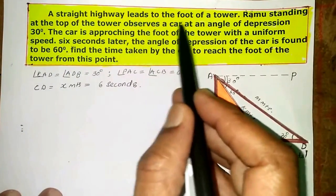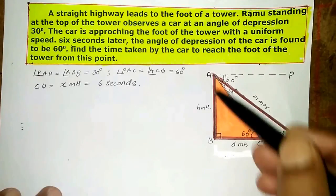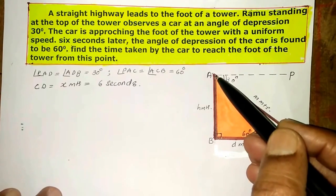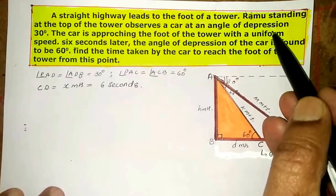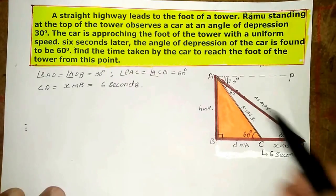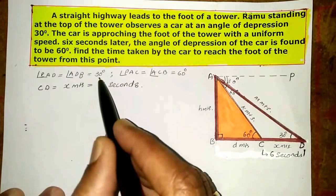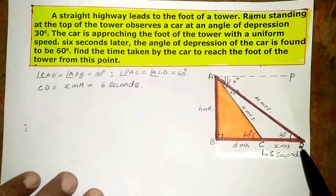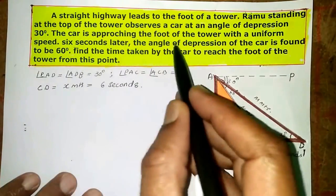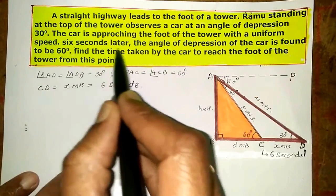A straight highway leads to the foot of the tower, with Ramu standing at the top. AB is the height of the tower. Ramu observes a car at an angle of depression of 30 degrees, so angle PAD equals 30 degrees, which means angle ADB equals 30 degrees. He then observes the car approaching the foot of the tower with uniform speed.